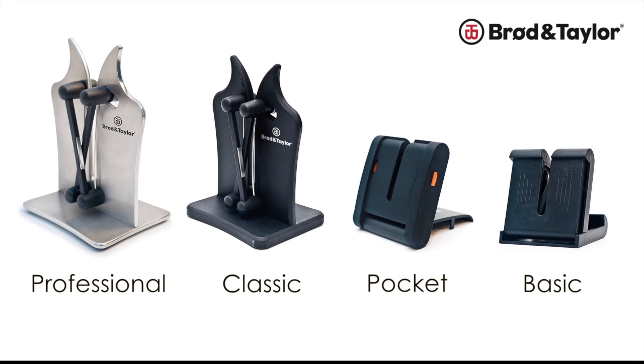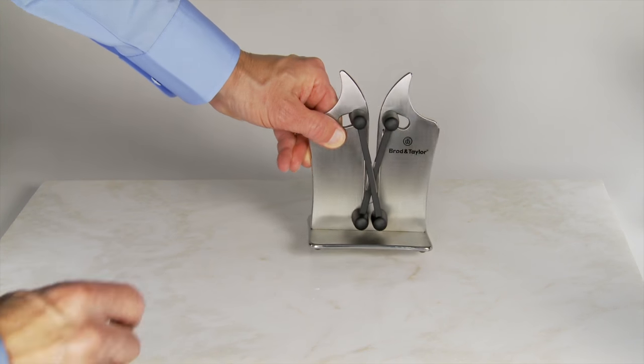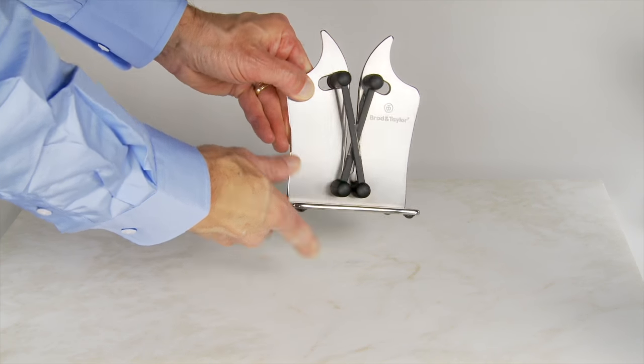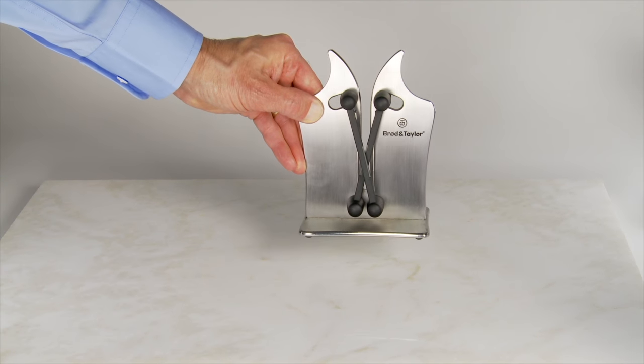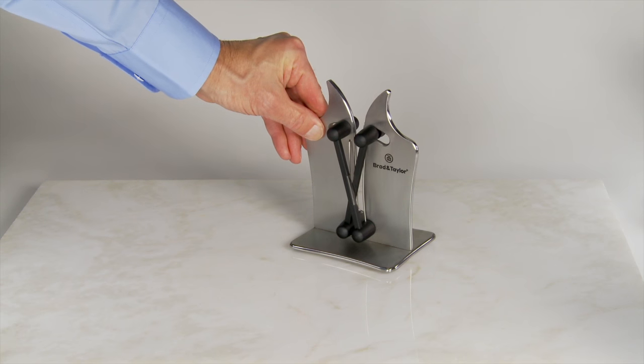I'm going to give you a quick demonstration of the Broad & Taylor Professional Knife Sharpener. It's a beautiful tool, ruggedly constructed, almost two pounds of solid stainless steel. And as you'll see, it does a wonderful job of sharpening all types of metal knives.